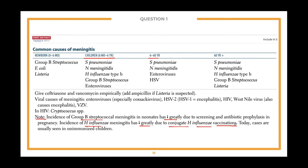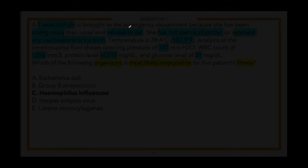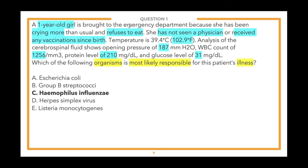The other answer choices are incorrect for various reasons: Listeria is more common in newborns and older adults; HSV causes viral meningitis, which would show low WBC and normal glucose; Group B Strep is potentially a cause but less likely than H. influenzae in an unvaccinated patient; E. coli is more relevant in younger children ages zero to six. It's important to keep in mind both what diseases unvaccinated patients are at risk for, and also what organisms are associated by age group.